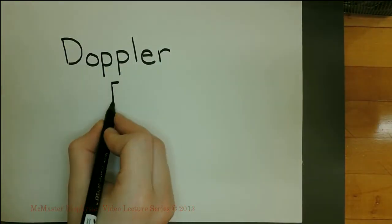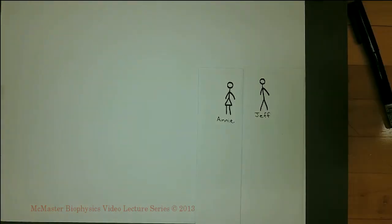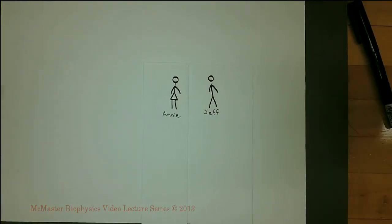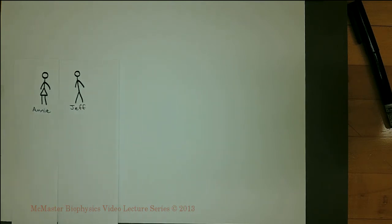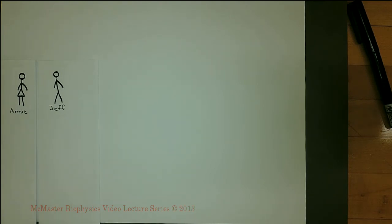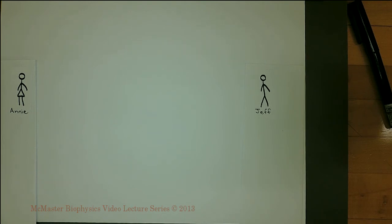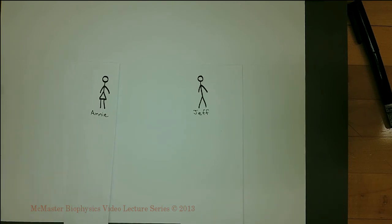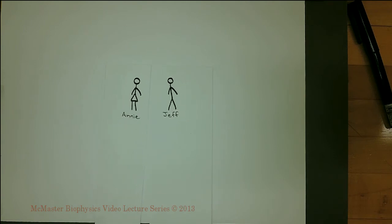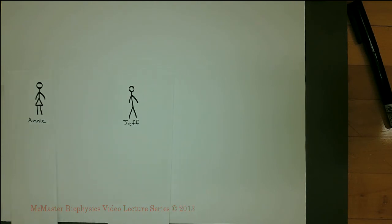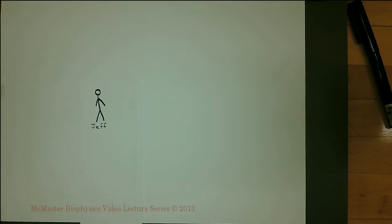To discuss the Doppler effect, we must first understand relative velocity. If both Jeff and Annie move at 10 meters per second to the left, they do not get any closer or farther from each other, making their relative velocity to one another zero. If Jeff moves to the right at 10 meters per second and Annie does not move, their relative velocity is 10 meters per second. If Jeff moves to the left and Annie moves to the right, both at 10 meters per second, their relative velocity is 20 meters per second. If Annie walks off at 15 meters per second and Jeff limps behind at 5 meters per second, their relative velocity is 10 meters per second.